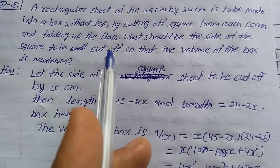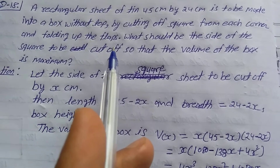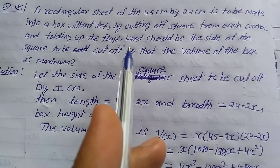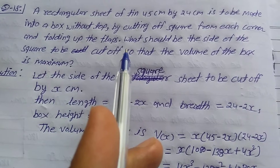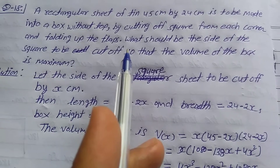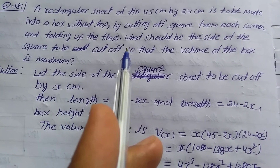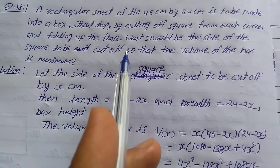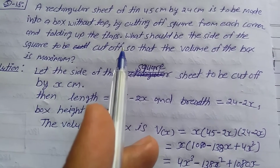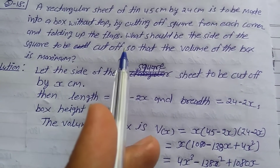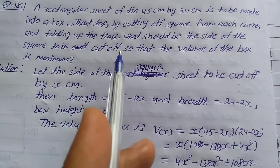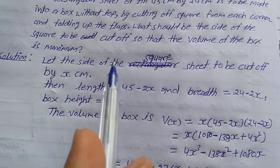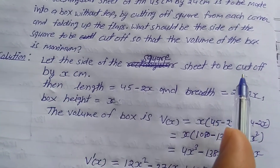A right angular tin sheet is given and from each corner a square sheet is removed. We need to find what side length gives maximum volume of the box. Solution: let the side of the square sheet to be cut off be x centimeters.